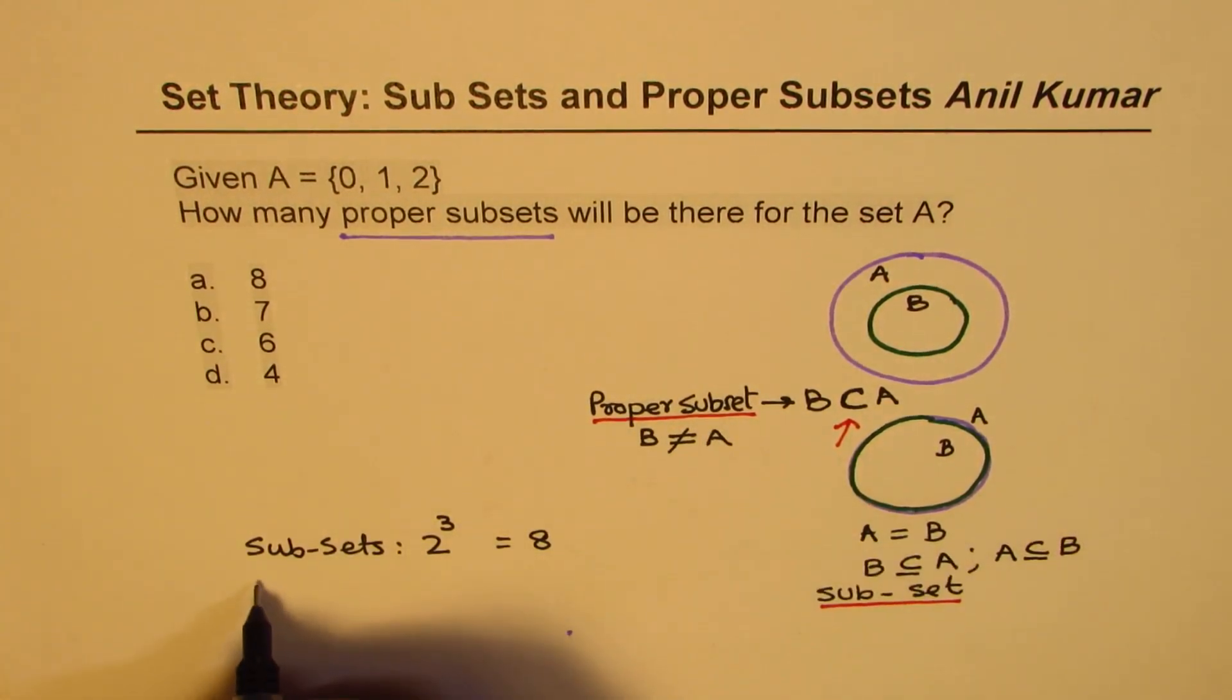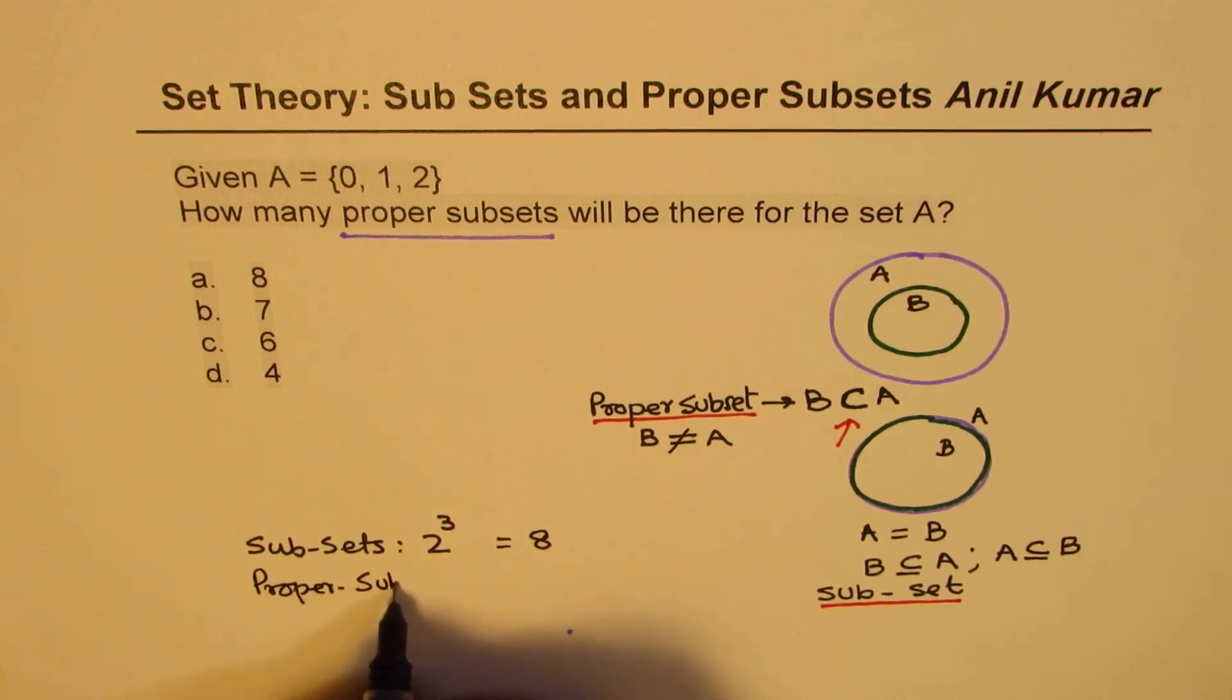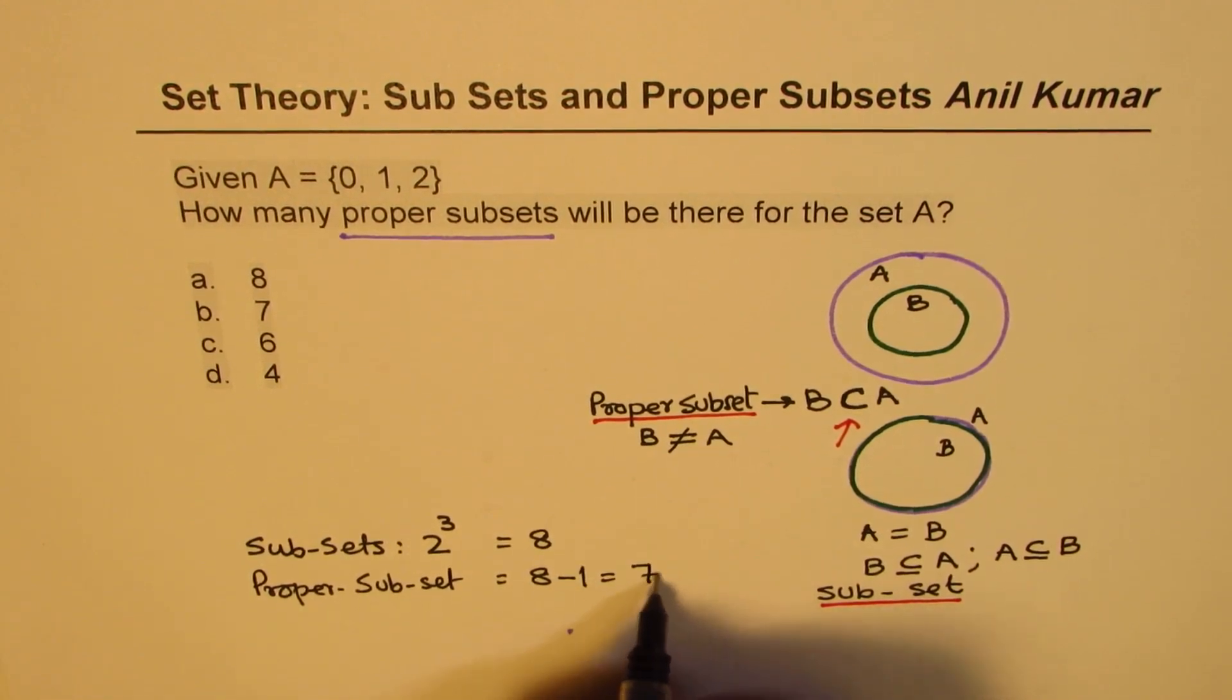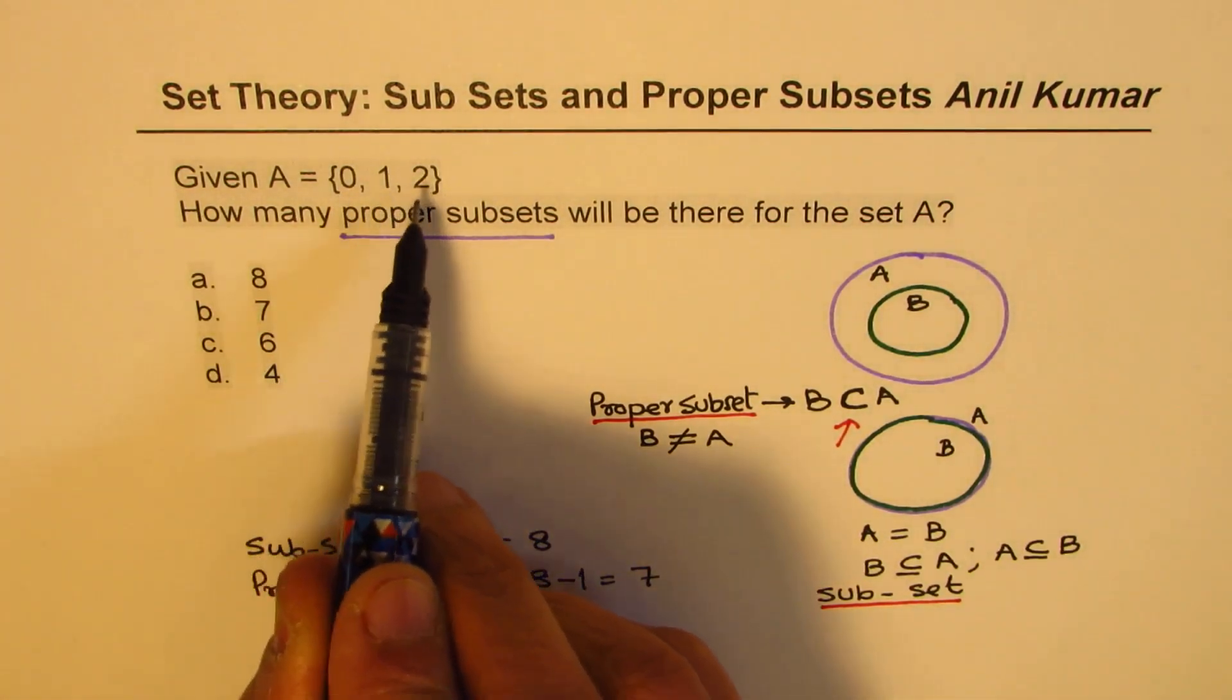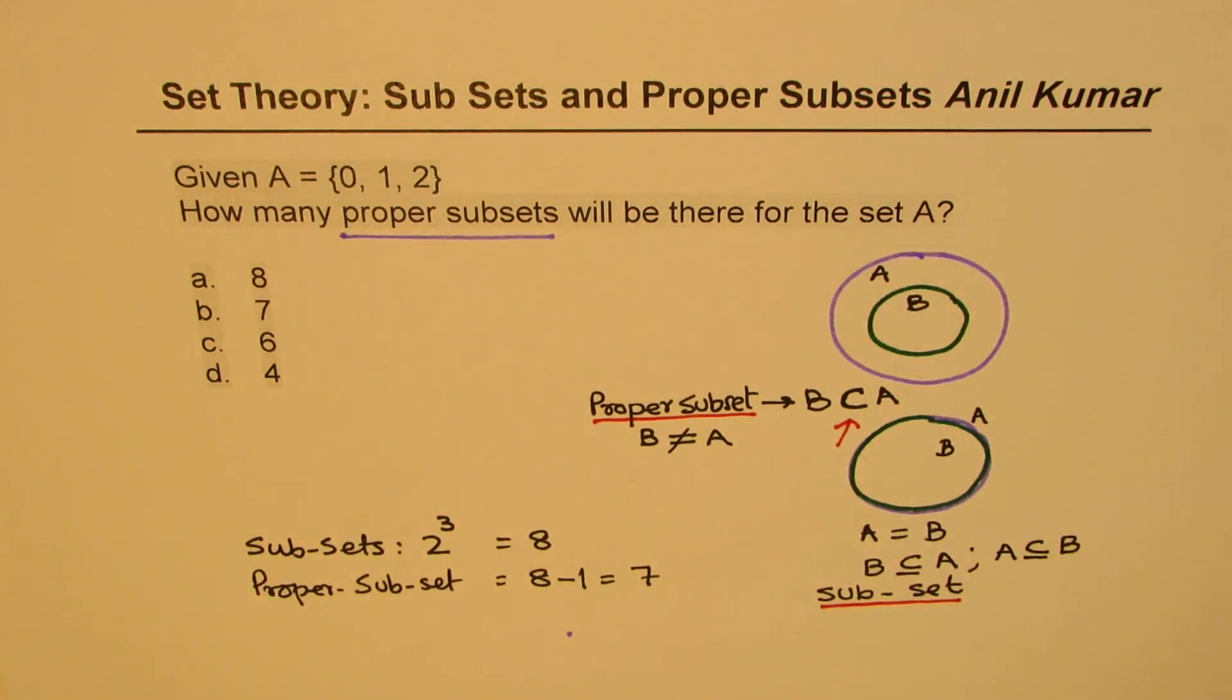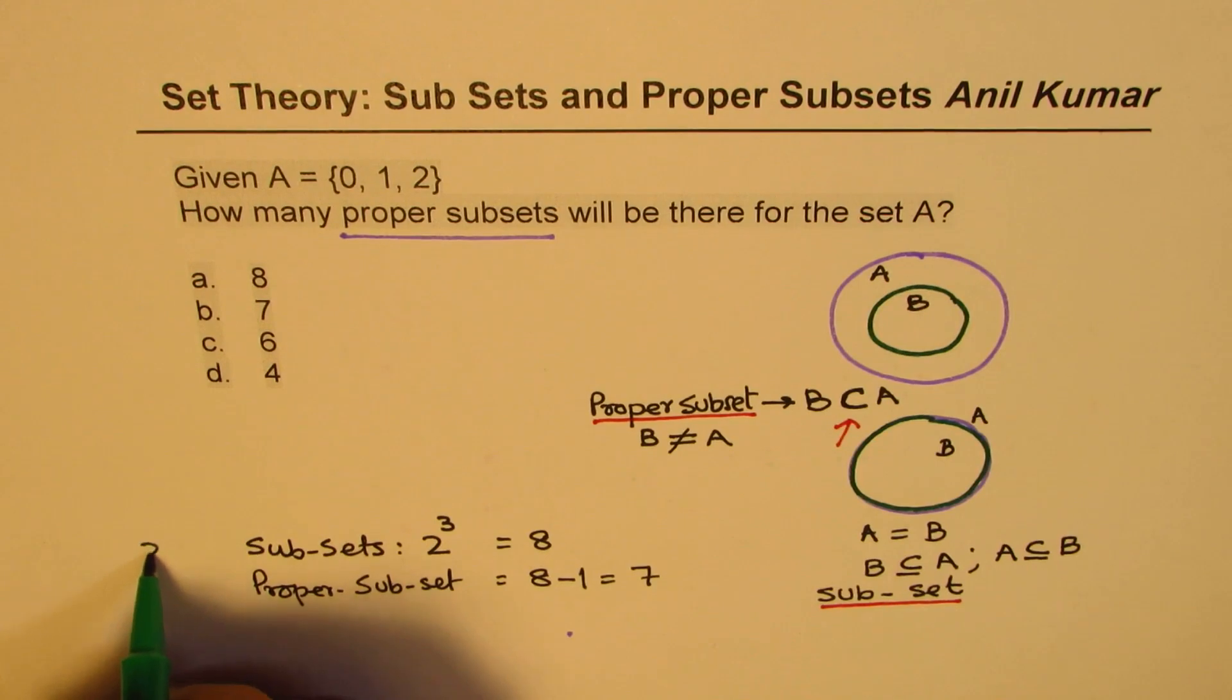As far as the proper subsets are concerned, how many proper subsets? Proper subsets will be one less, will be eight minus one which is seven, since one of the subsets is {0, 1, 2} itself. You get the idea right, so we could use the formula two to the power of n to get our result, right, here n equals to three for us.